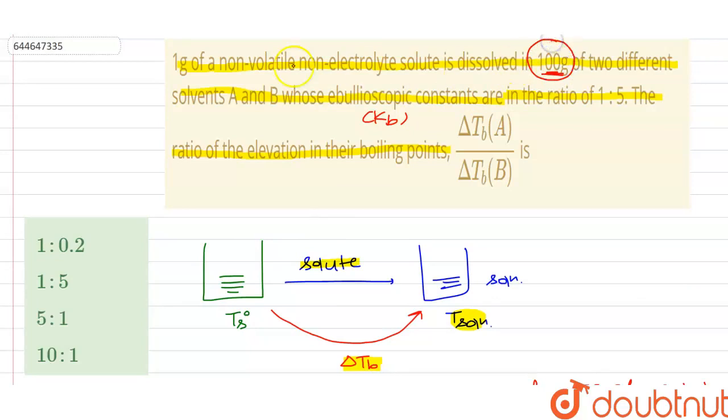cases it will be 100 grams. For both solutions, suppose we have solvent A and solvent B, each having 100 grams. In both cases we are adding the non-electrolyte non-volatile solute, which is one gram